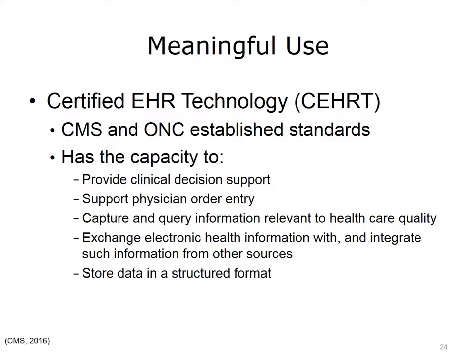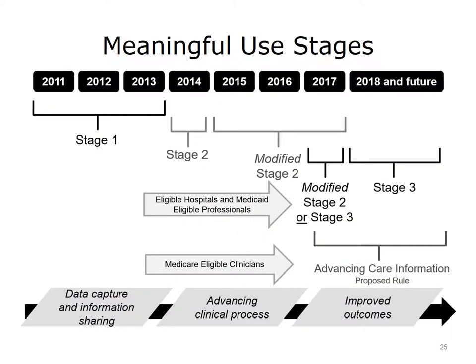Certified EHR technology gives assurance to purchasers and other users that an EHR system or module offers the necessary technological capability, functionality, and security to help them meet the Meaningful Use criteria. Certification also helps providers and patients be confident that the electronic health IT products and systems they use are secure, can maintain data confidentiality, and can work with other systems to share information. Meaningful use began in 2011, requiring providers to meet Stage 1 objectives. In subsequent years, additional stages were implemented, again paving the path to improved quality outcomes. In April 2016, CMS introduced an additional proposal to expand on the goal for improving quality outcomes using certified EHR technology, while also focusing on payment reform. In the proposed rule, Meaningful Use is renamed Advancing Care Information and is one of four components that eligible providers would need to submit to meet the expanding requirements.